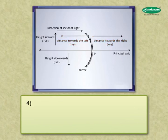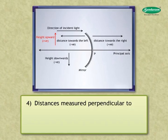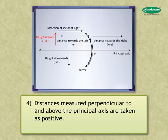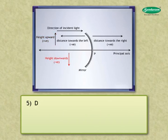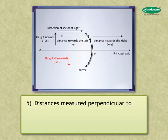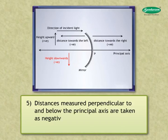Four, distances measured perpendicular to and above the principal axis are taken as positive. Five, distances measured perpendicular to and below the principal axis are taken as negative.